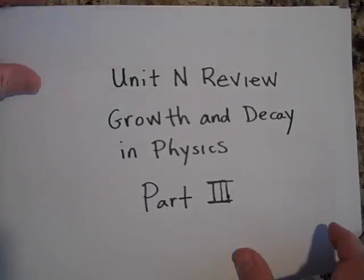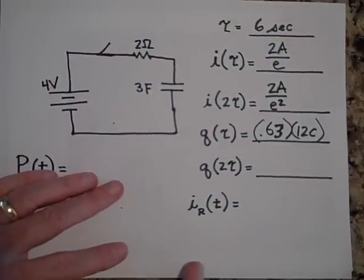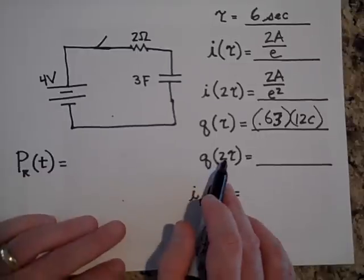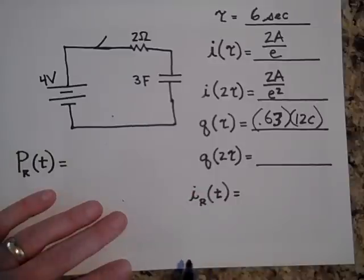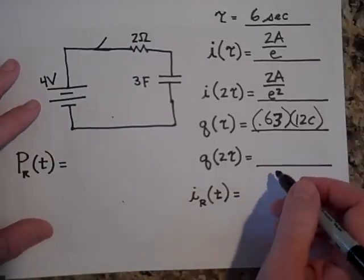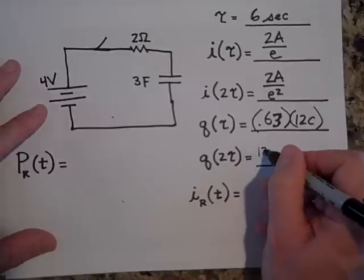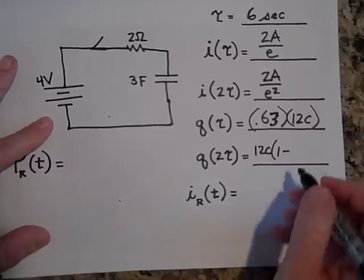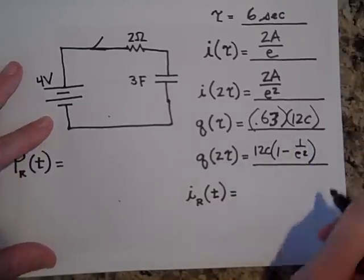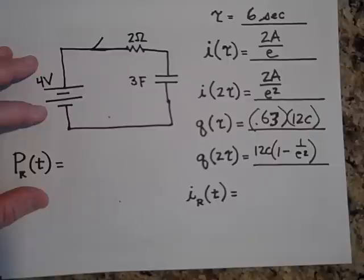All right, here we are part three of the unit review. We're still going through these. What about when you are at twice the time constant — what will be the charge? At twice the time constant, it's going to be the final charge, 12 Coulombs, times 1 minus 1 over e squared. That's what the math gives you.